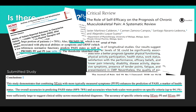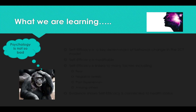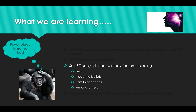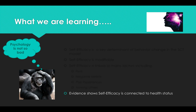And finally, in a submitted study, we've also found that health status is better predicted by the combination of self-efficacy and other physical scales like physical function and pain interference than either one alone. So what are we learning? We're learning that self-efficacy is a key determinant of behavior change in some psychological models, that self-efficacy is modifiable, there are specific techniques we can use, self-efficacy is linked to many factors, identifying these factors requires skill in psychological therapies, and evidence shows that self-efficacy is connected to health outcomes.